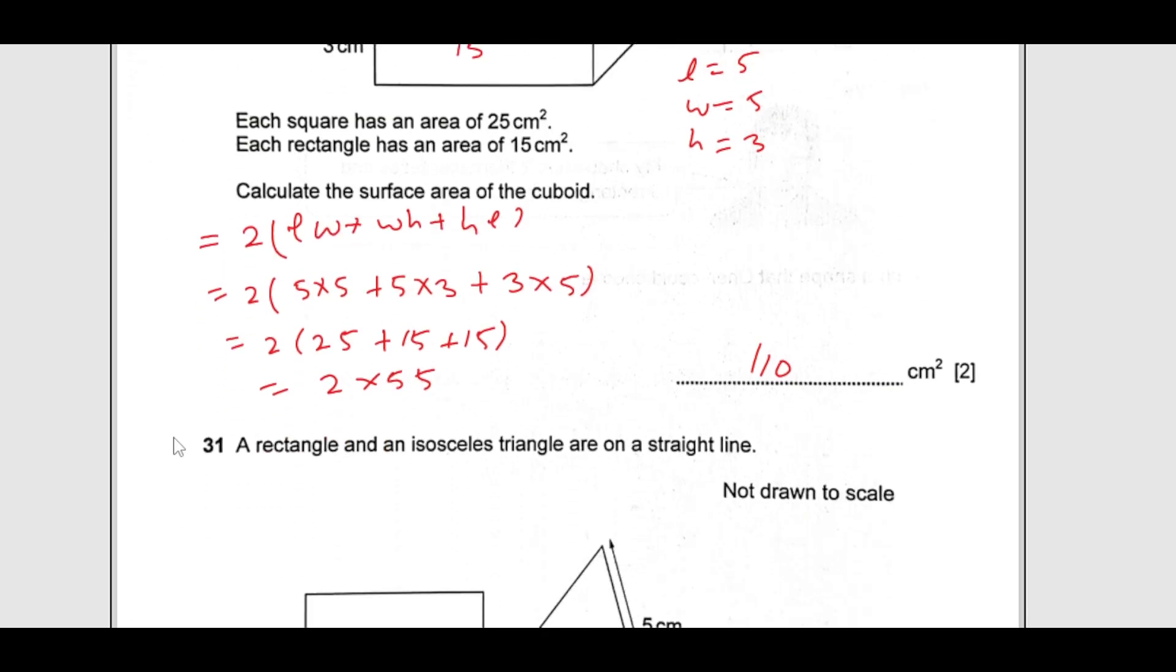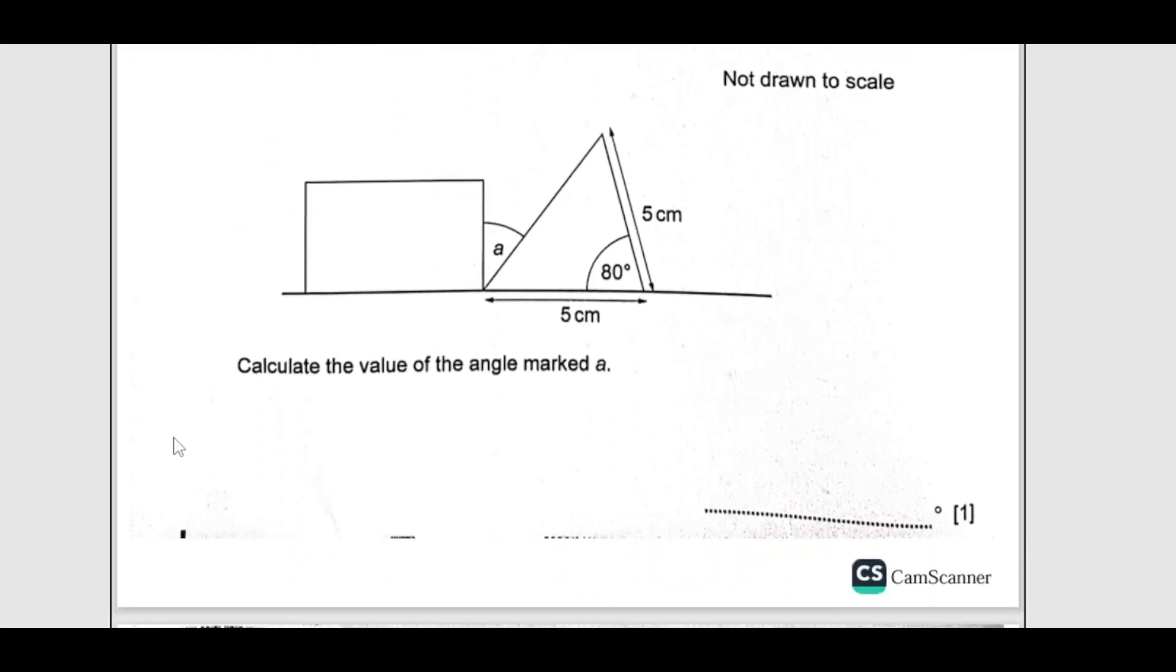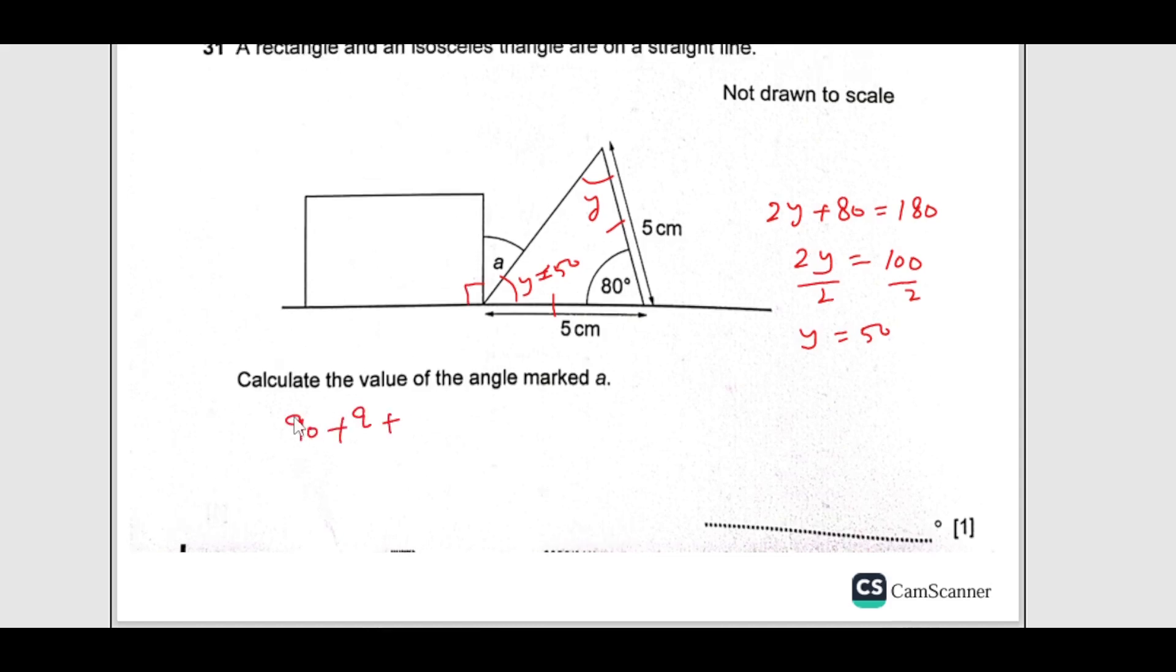Number 31, a rectangle has an isosceles triangle on a straight line. Calculate the value of angle marked A. As you can see, this is 5 and this is 5. So these two sides are equal, meaning this angle and this angle is the same. From here, y plus y which is 2y plus 80 is going to be 180, sum of angles of a triangle. So 2y is 180 minus 80, which is 100. Divide by 2, so y is 50. So this angle is now 50. This angle is 90 because this is a rectangle. So we will have 90 plus A plus 50 is 180. From here, A is going to be 180 minus 90 plus 50, which is 140. So that is going to be 40. So it is 40 degrees.